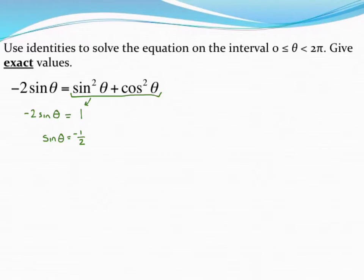Looking underneath the sine column for a ratio of one half, I see that I get pi over six as an angle that would do that. Pi over six may or may not be the answer. It's really just a reference angle.